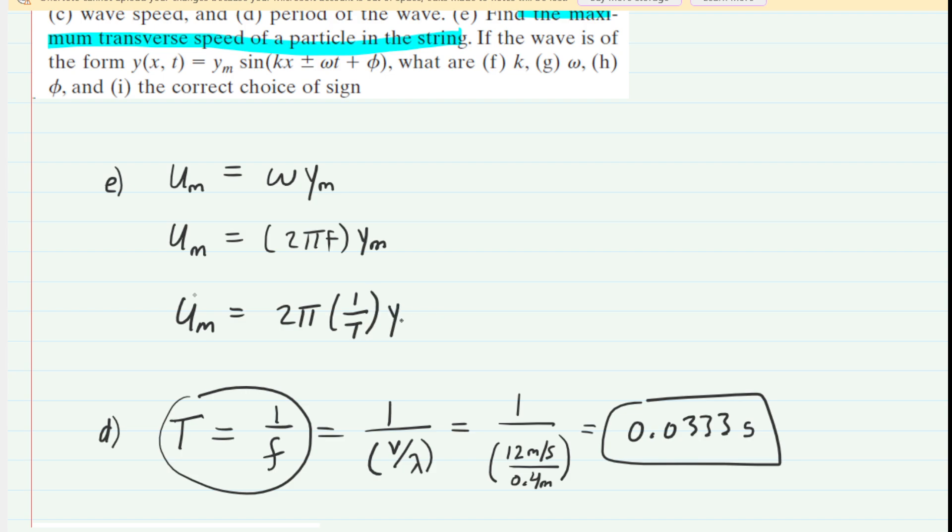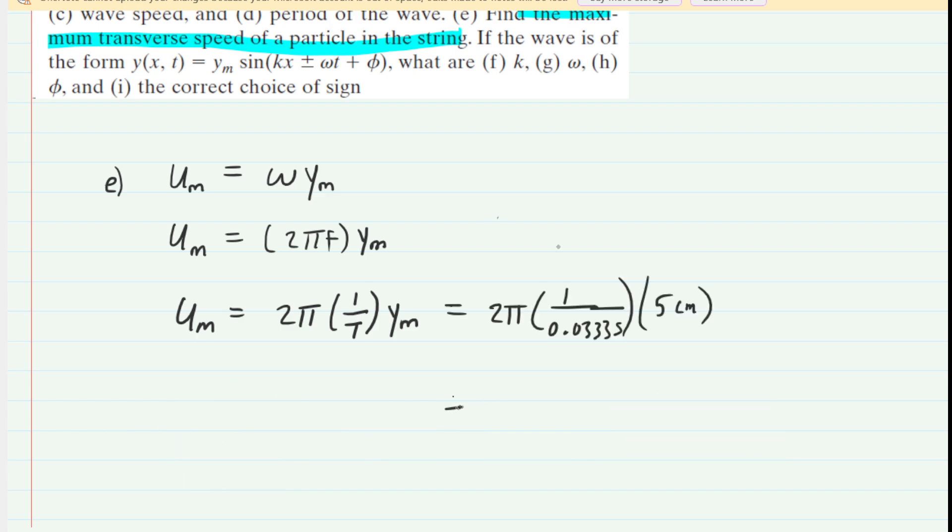And now we have all of these values. So we're able to now plug in to find the maximum transverse speed. So there are the values plugged in. When you compute this, you're going to get about 942. Dimensionally, we have centimeters per second. So that's a valid answer. If you need meters per second, just divide by 100. You get 9.42 meters per second as an equivalent answer.